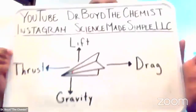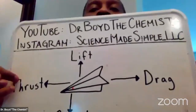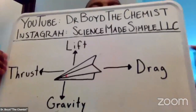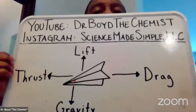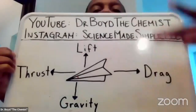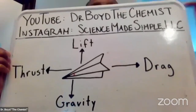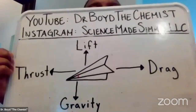Just to review before we make our paper airplane: the four forces that are acting on a plane are drag — that opposes thrust — drag goes backwards, thrust goes forward. We have lift and we have gravity. Lift is the upward force, gravity is the downward force.